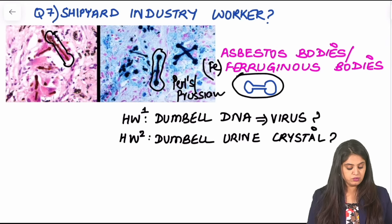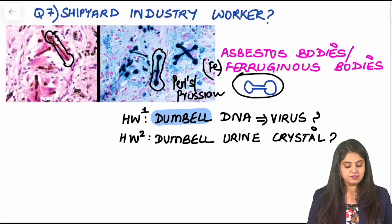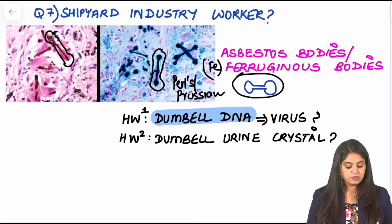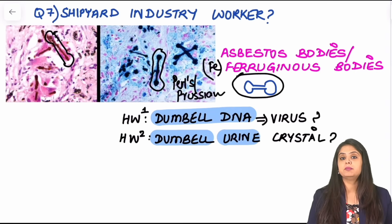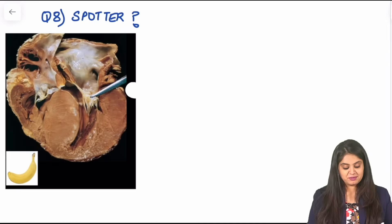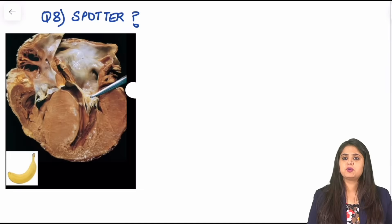That brings me to today's homework: what are the two other things that are also dumbbell-shaped? Which virus has a dumbbell-shaped DNA, and which urine crystal is dumbbell-shaped?